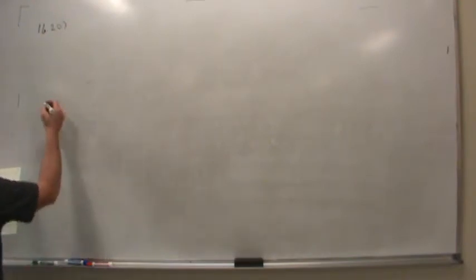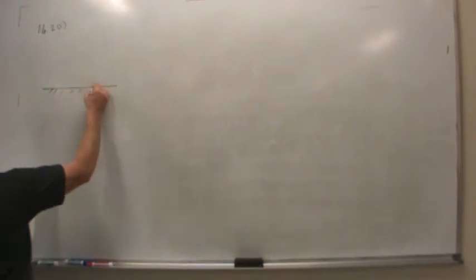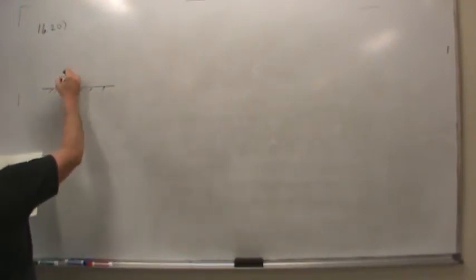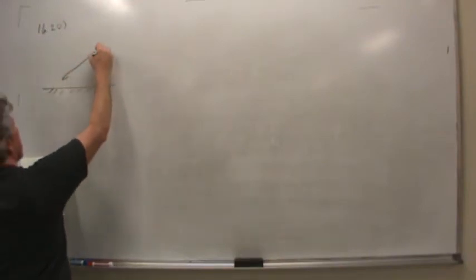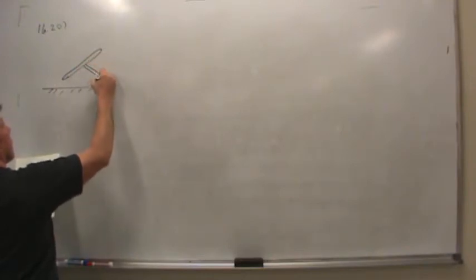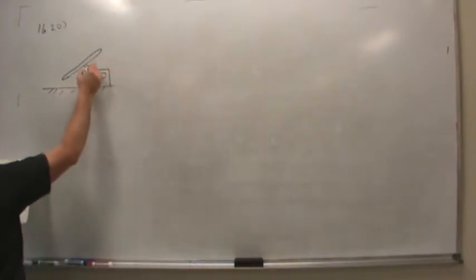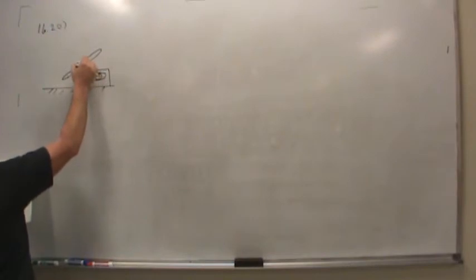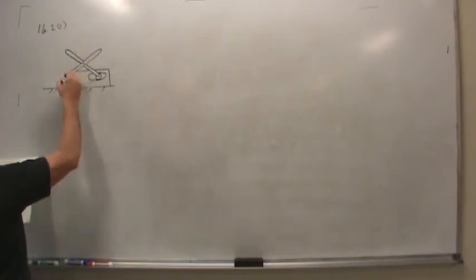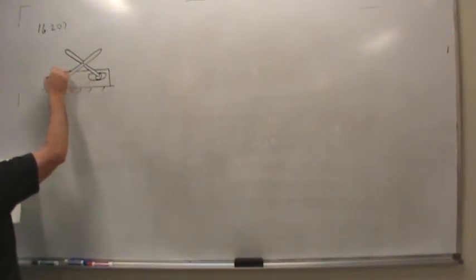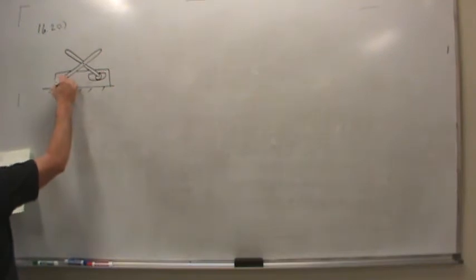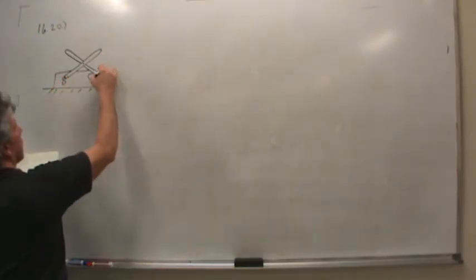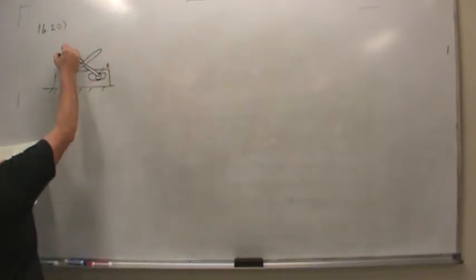Let's sketch the problem. There's ground. I'm going to sketch a link first — a roller inside of a slot on this side. There's a pin at C, and a pin to ground back at D. This is point E.